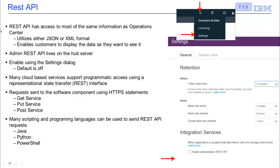Looking at REST APIs, we also have the ability for customers to utilize a REST API to access about the same information as the Operations Center. This will utilize either JSON or XML format, and it basically enables the customer to display the data as they want to see it, not as the Operations Center shows it. The admin REST API lives on the Operations Center hub server, and you do need to enable it by going into the Settings tab and clicking Enable Administrator REST API.